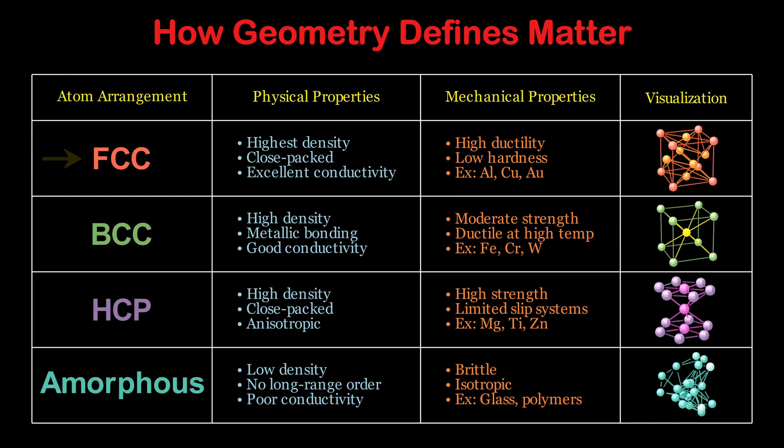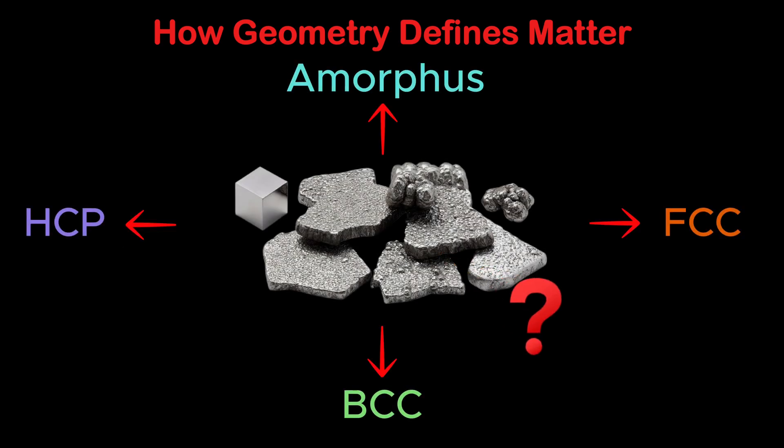Face-centered cubic, body-centered cubic, hexagonal close-packed, amorphous solids. Now, how do physicists identify which material belongs to which class? They look at their symmetries.